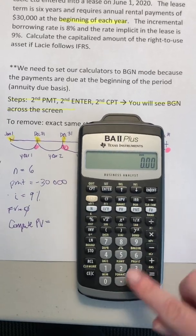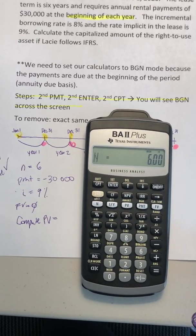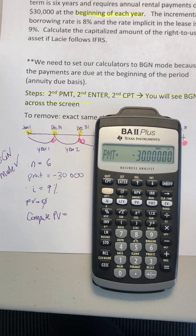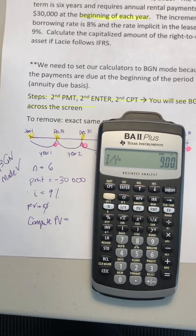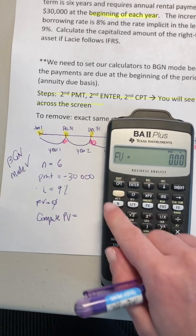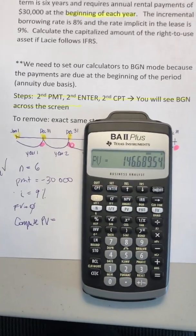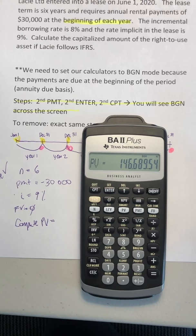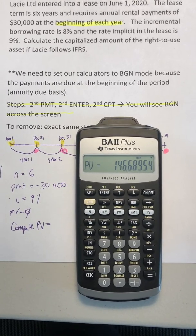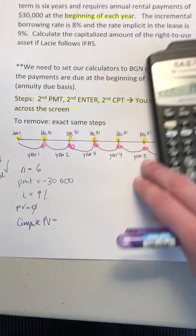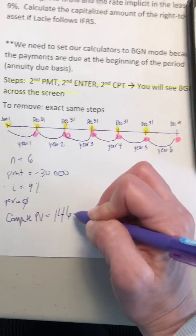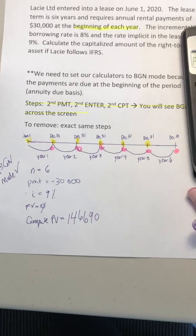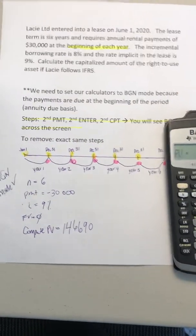I'm going to put in 6N, $30,000 negative for my payment, 9I, and zero future value. And I'm going to compute present value. And I'm going to get $146,689.54 — so approximately $146,690 is my present value. That is the present value of the lease, and that is what we would capitalize for the right-to-use asset under IFRS.